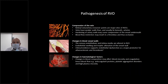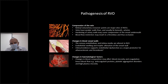Regarding basic pathogenesis, the most common sites of occlusion are where the artery crosses the vein in the retina — retinal artery-vein crossover points are the major sites. Veins have weaker walls than arteries and usually lie beneath the arteries. Hardening of artery walls causes compression of the vessels underneath, blood flow restriction results in thrombus formation, and thus occlusion.